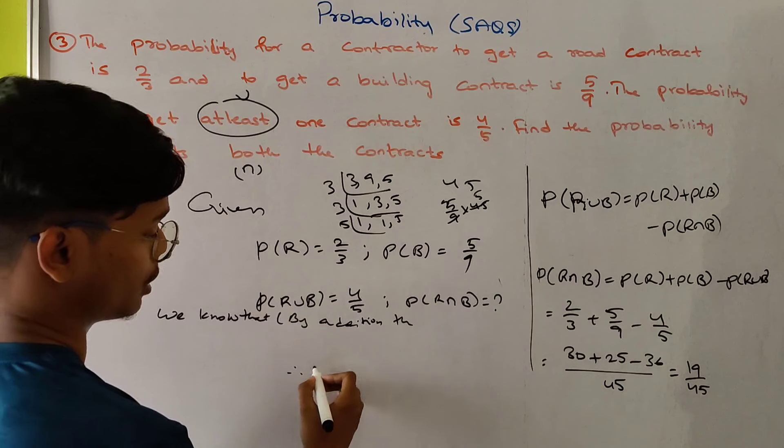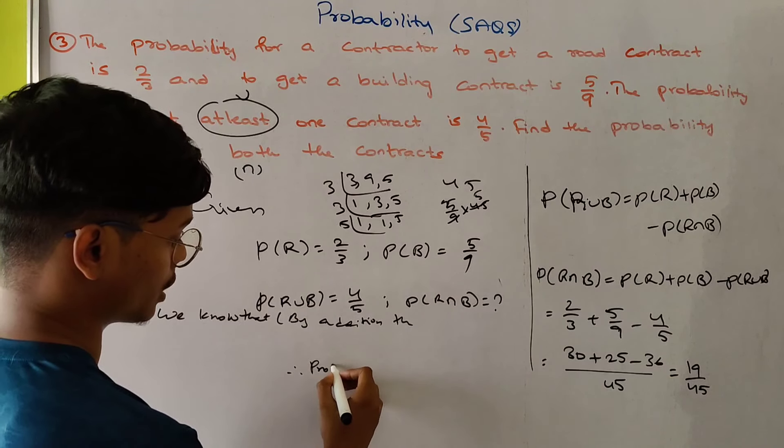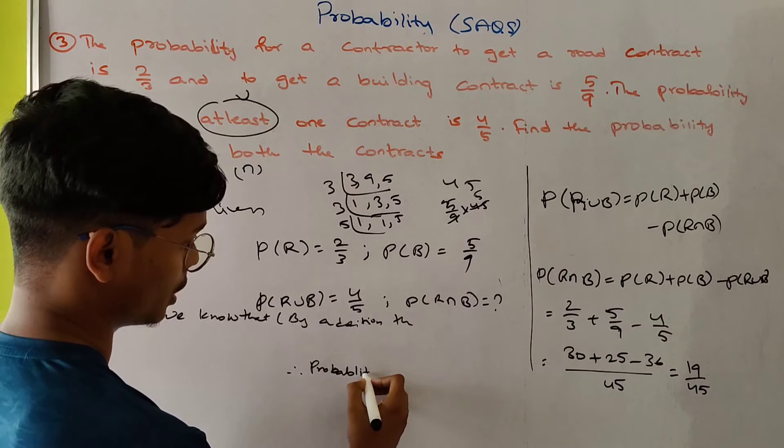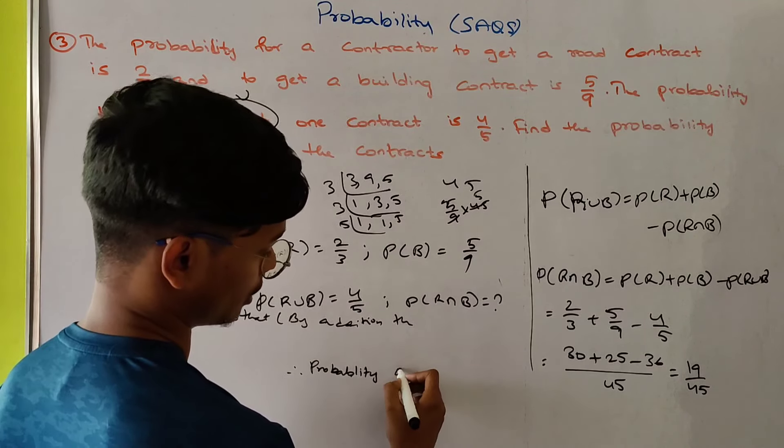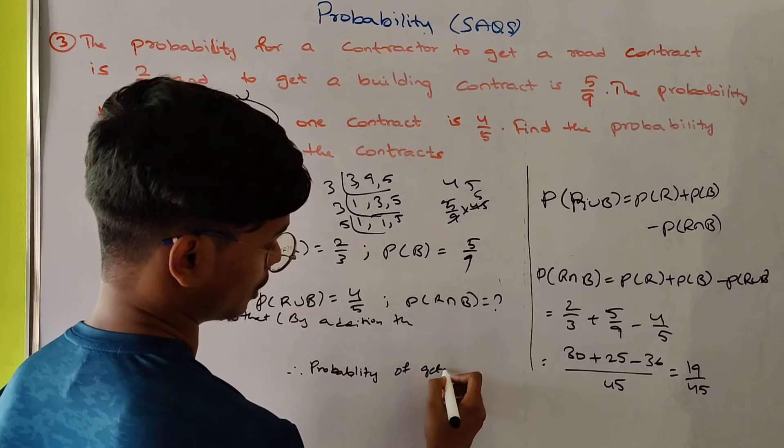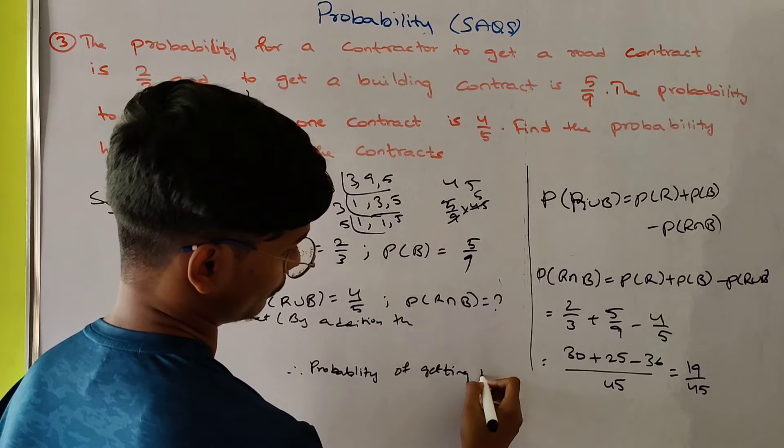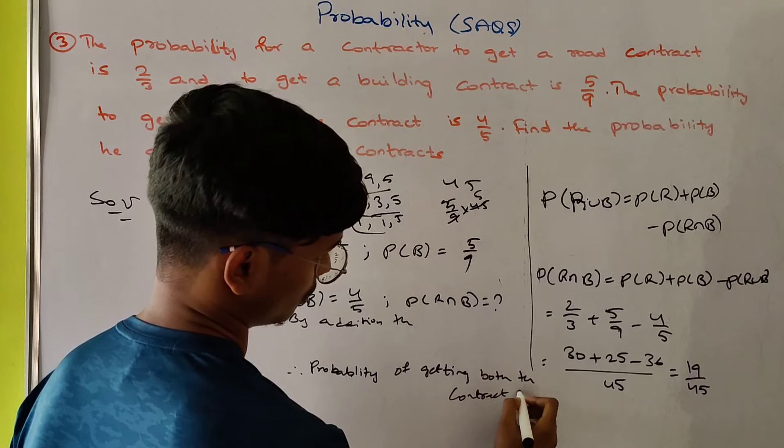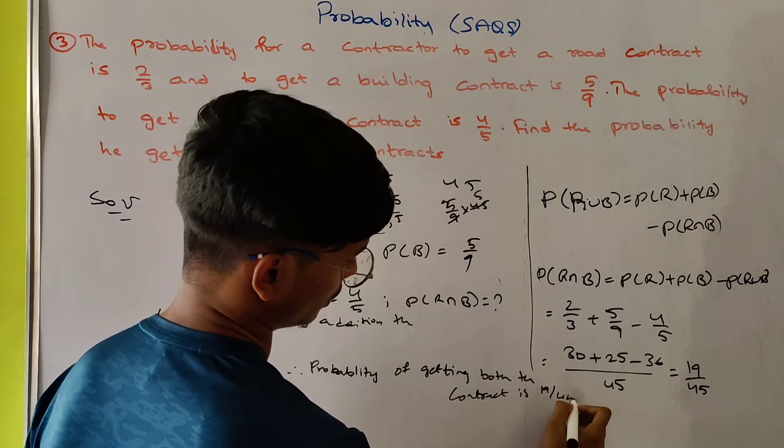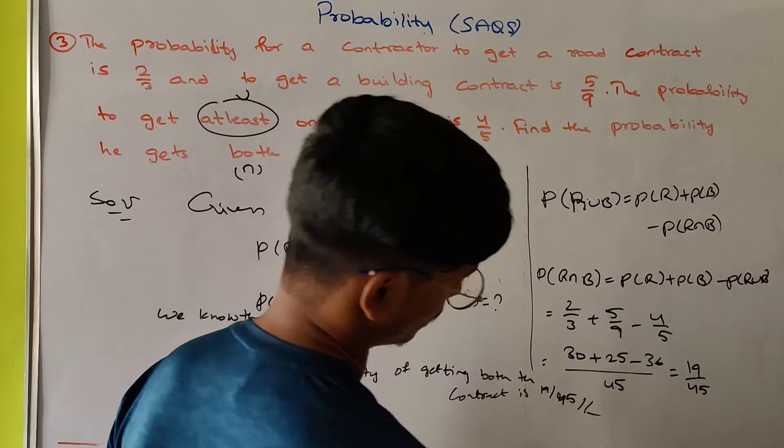Find the probability of contractor, probability of getting both the contracts is 19 by 45. That is the answer.